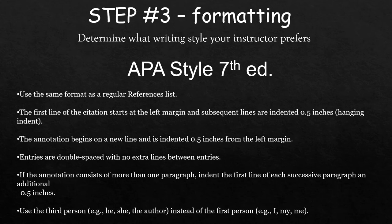Remember, an annotated bibliography is the same thing as a bibliography — a list of all the sources you consulted in your research — but it goes a step further by adding annotation or notes for each source. In APA, use the same format as you would in a regular references list. The first line of citation starts at the left margin and the rest of the citation entry and the annotation will be indented half an inch. Use the hanging indent to accomplish this, continue to double space, and make sure there aren't any extra lines between entries.